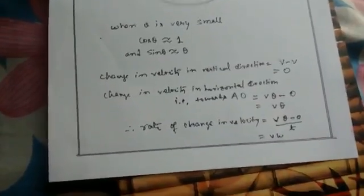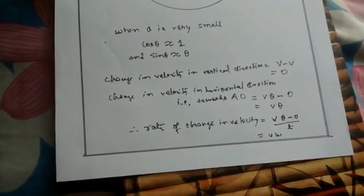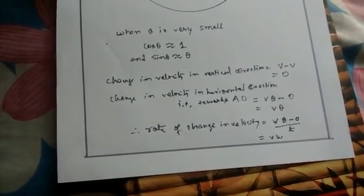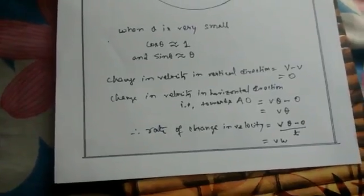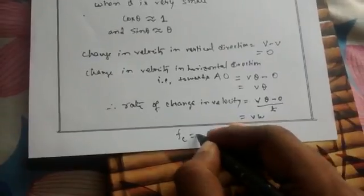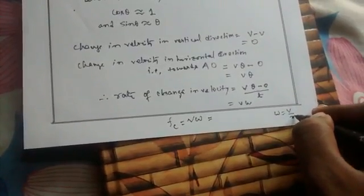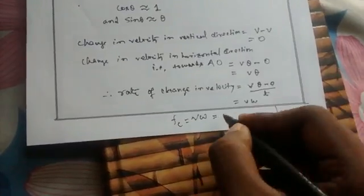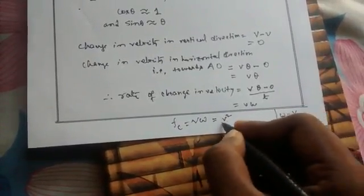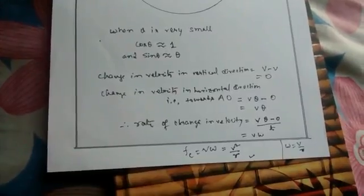The rate of change in velocity with respect to time t is the acceleration, and more precisely it should be called centripetal acceleration. So centripetal acceleration a_c is equal to v·omega. But we know that omega equals v/r, so this expression becomes v²/r. This is the centripetal acceleration expression.